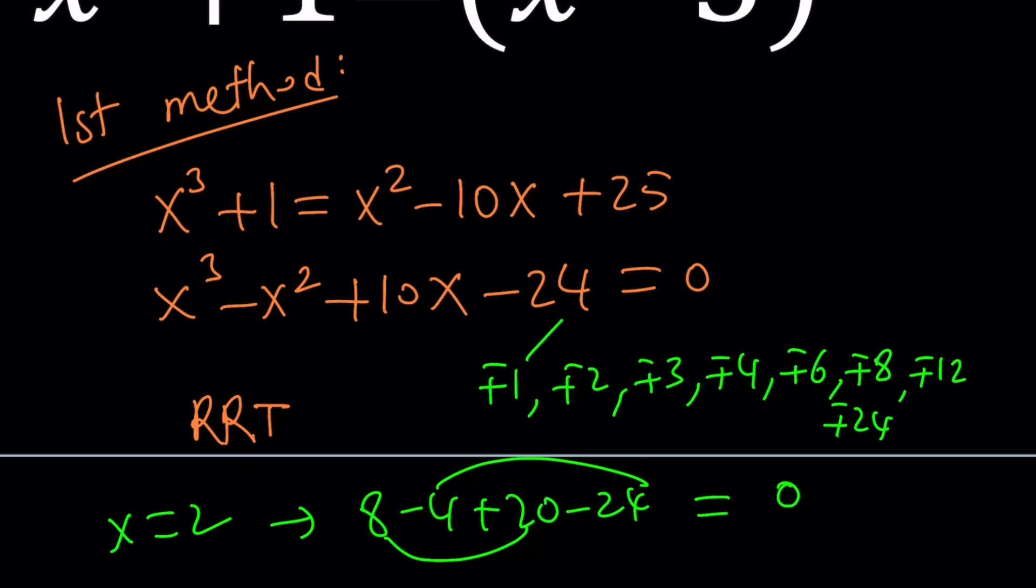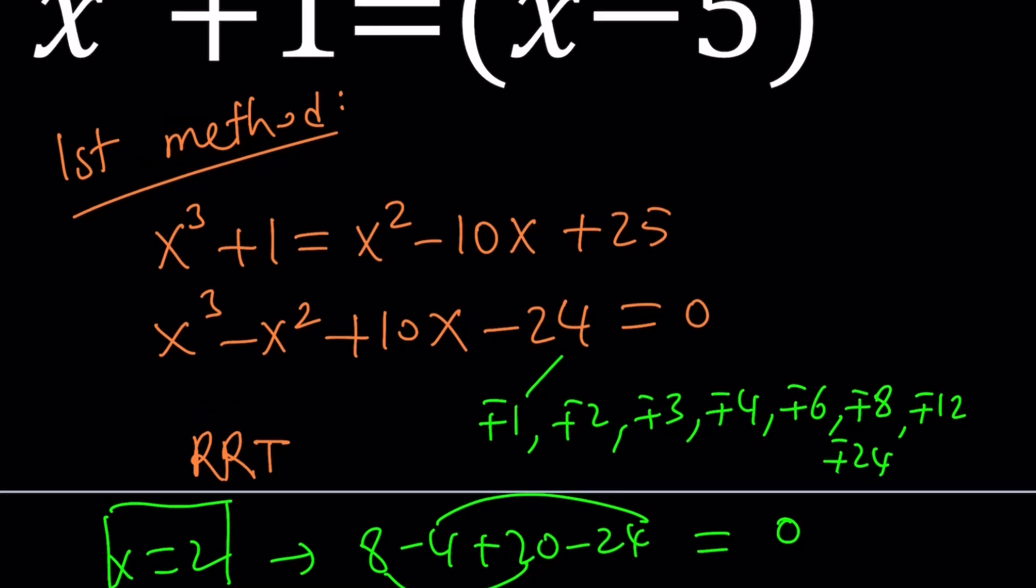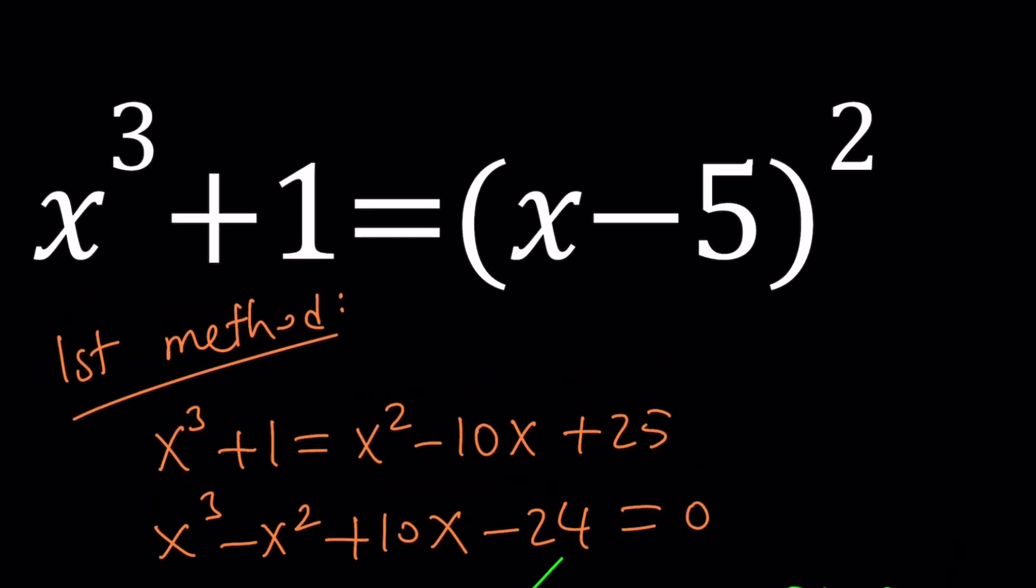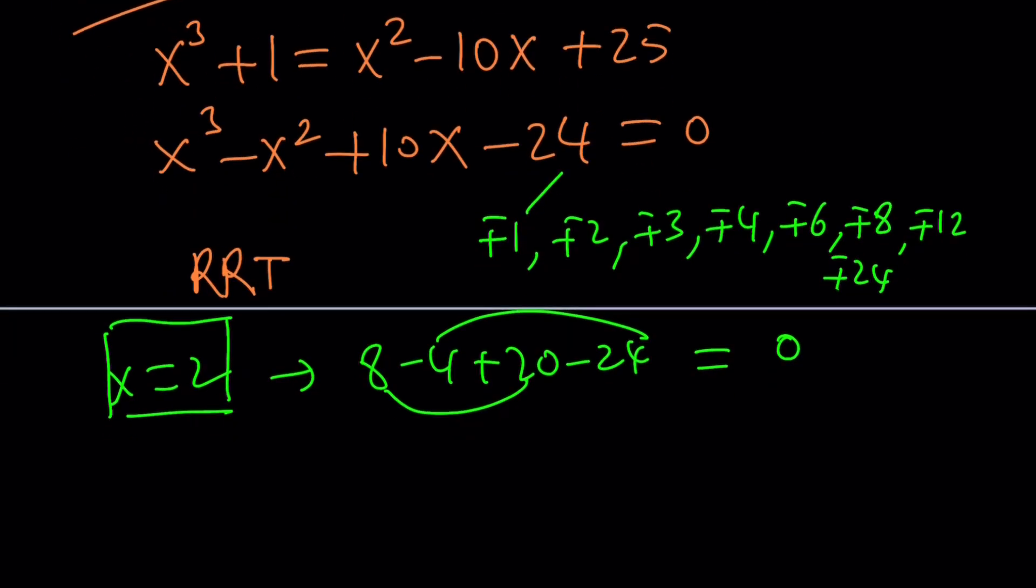I didn't even know that 2 would work, but it just happens to be. Trust me, I didn't check this earlier. Anyway, so x equals 2 is going to work, and obviously you can check that in the original problem too, because 2 cubed plus 1 is 9, and 2 minus 5 is negative 3, and negative 3 squared is 9. I should have known that, right? But anyways, x equals 2 works,